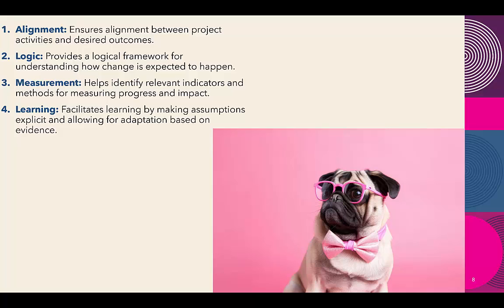Without indicators, we cannot go anywhere. The theory of change helps us derive the indicators that we are going to be measuring. I've seen certain institutions develop a theory of change but without a logical framework matrix. In such cases, you're supposed to look at the theory of change, identify the indicators, and use those indicators to make a measurement of change.